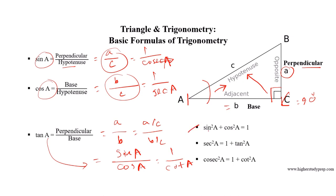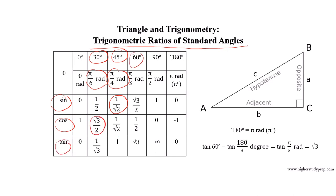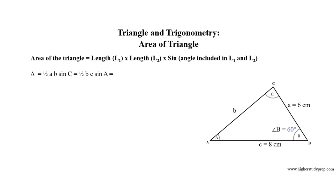Key identities to remember: sin²A plus cos²A equals 1; sec²A equals 1 plus tan²A; cosec²A equals 1 plus cot²A. For standard angle values: sin 45° (π/4 radians) equals 1/√2; cos 30° (π/6 radians) equals √3/2; tan 60° (π/3 radians) equals √3. Note that 180 degrees equals π radians.